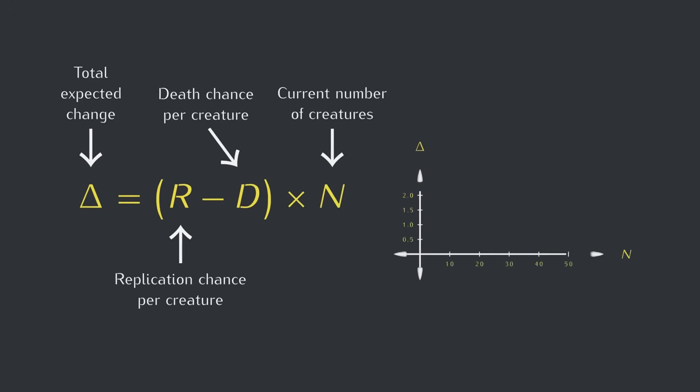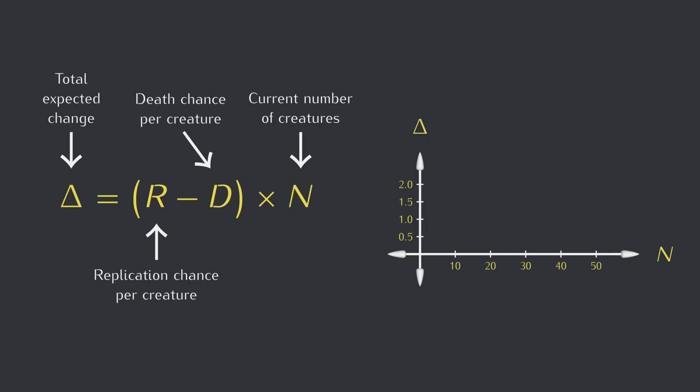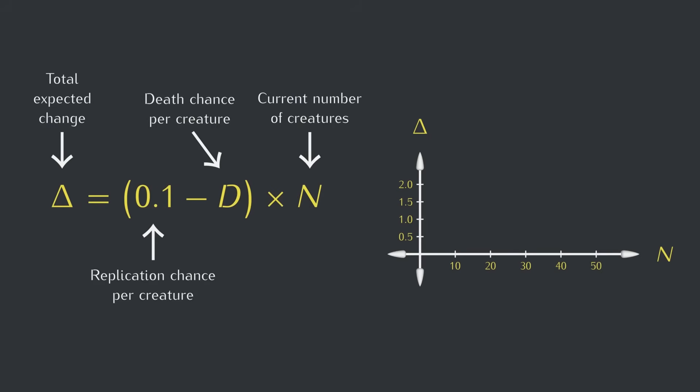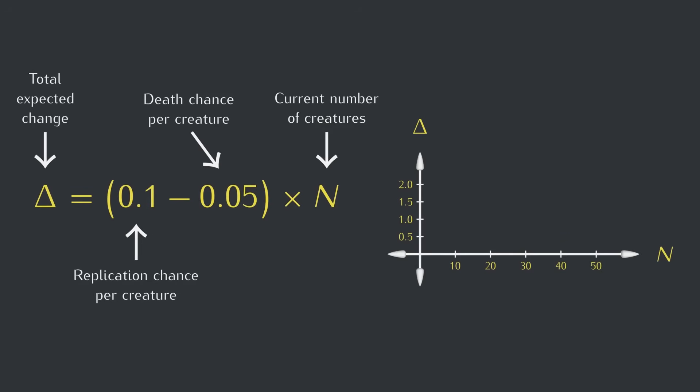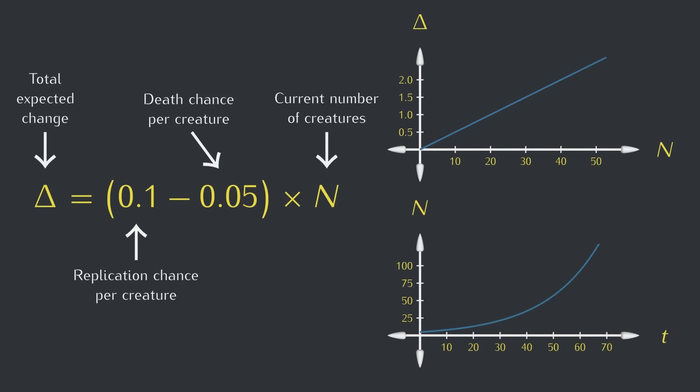And we can graph this equation to help us visualize our prediction. The most interesting case is when r is greater than d. For example, with a replication chance of 10% and a death chance of 5%. Then, this graph becomes a straight line with a positive slope. The more creatures there are, the more new creatures we expect to appear from one time to the next. This leads to exponential growth.